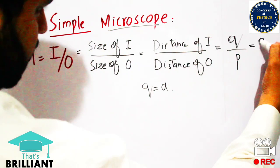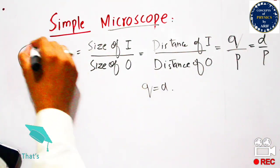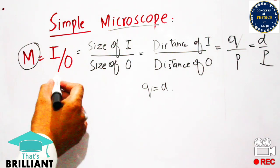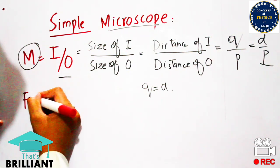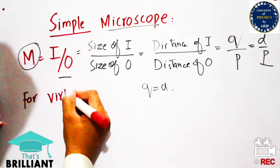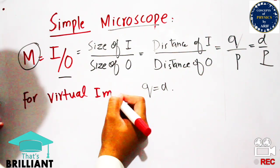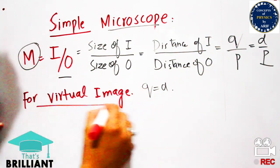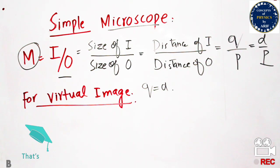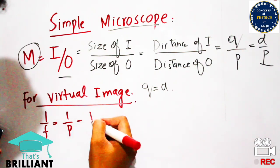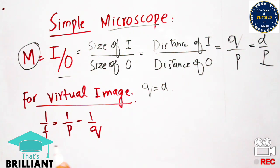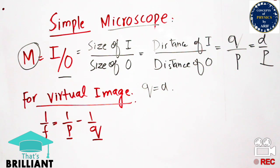The distance of the image is replaced by Q and the distance of the object by P, so magnification is Q/P, or D/P after applying the condition Q = D = 25 cm. To understand this further, we apply the virtual image formula: 1/F = 1/P − 1/Q, where the minus sign indicates the image is virtual, P is the object distance, Q is the image distance, and F is the focal length.